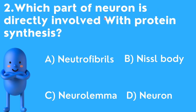Second question: Which part of the neuron is directly involved with protein synthesis? Neurons are a type of cell. Options are: A) Neutrophils, B) Nissl body, C) Neurolemma, D) Neurons.